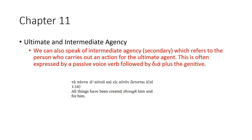We can also speak of intermediate agency or secondary agency, which refers to the person who carries out an action for the ultimate agent. This is often expressed by a passive voice verb followed by dia (διά) plus the genitive. All things have been created through him and for him. If you're a little shaky on grammar but can read pretty fluently, then you will understand this pretty well without needing to hold the grammar concept in your mind.